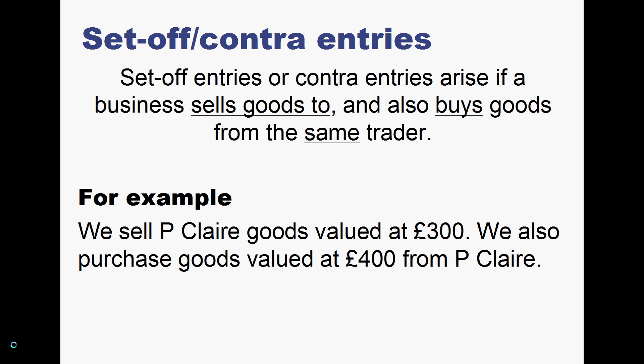Set-Off entries or Contra entries arise if a business sells goods to and also buys goods from the same trader — the same person. Here's an example with P.Claire. We sell to P.Claire a value of £300, and we also purchase goods valued at £400 from P.Claire. So there's an element of a debtor and an element of a creditor there.